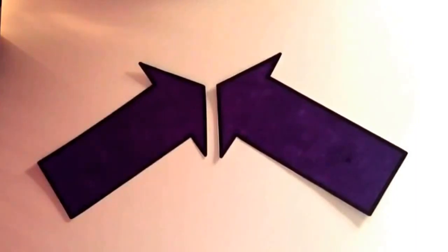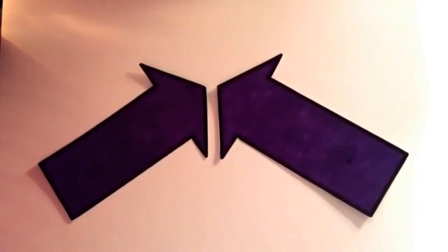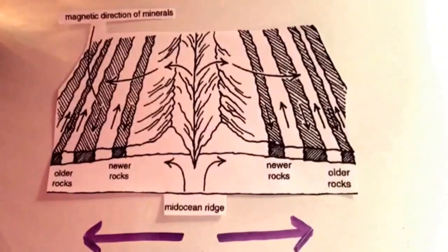For example, the Himalaya mountains were formed because of the collision between the Eurasian plate and the Indian-Australian plate. The next boundary is the divergent plate boundary.